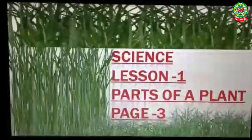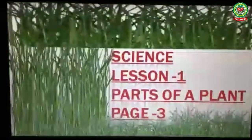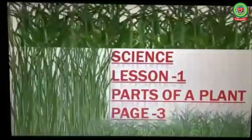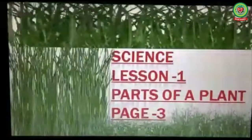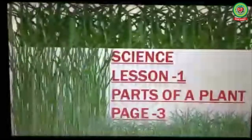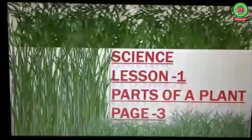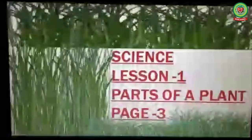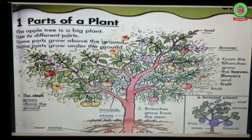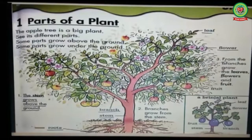Good morning everyone, welcome to the science class. In our previous class we have learned terms, word meanings, and the part of the plant that grows under the ground, that is root. In today's class we will learn different parts of plant that grows above the ground. Open your science book, lesson 1: Parts of a Plant, page number 3. A plant has two main parts: root and shoot.